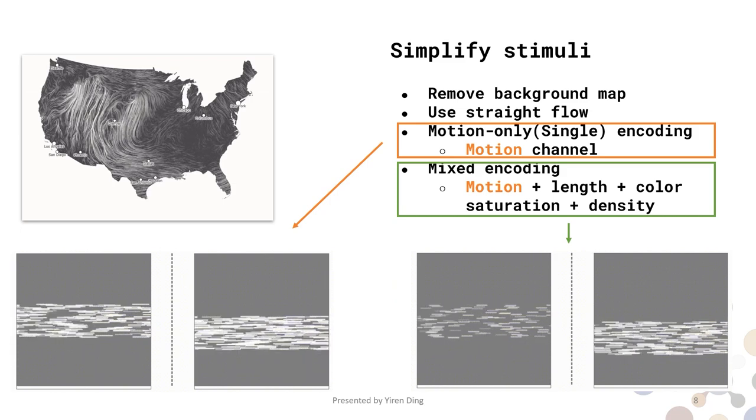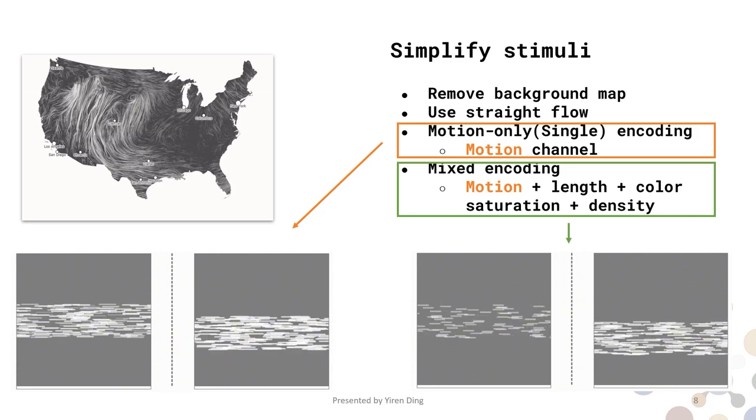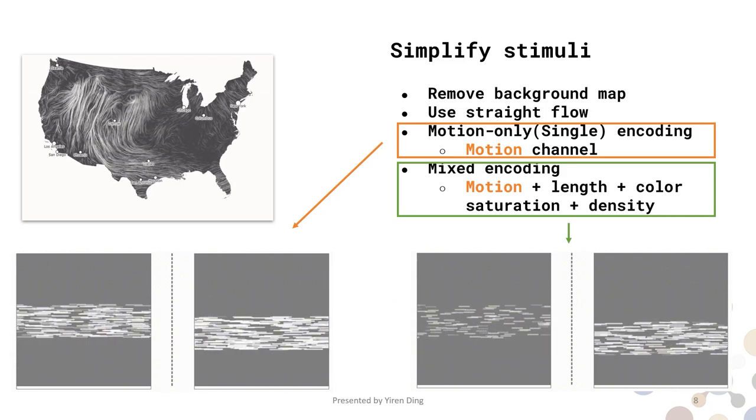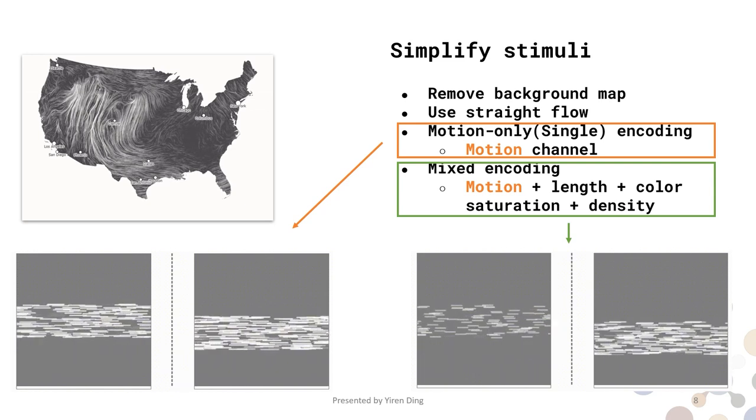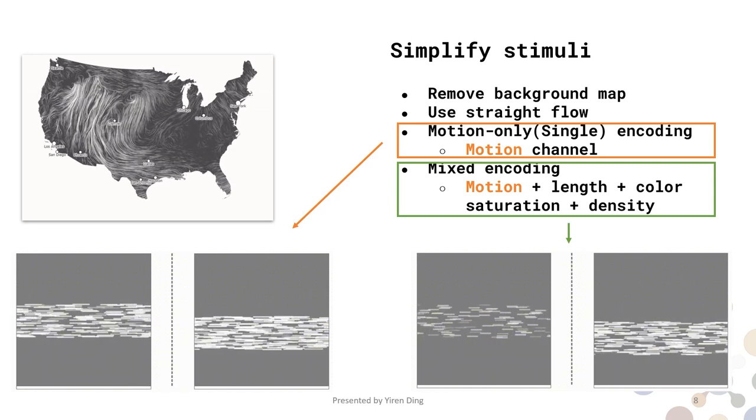Another condition is the mixed encoding condition. The data values are encoded by motion and the three most common static channels in particle wind flow map: length, color saturation, and density.